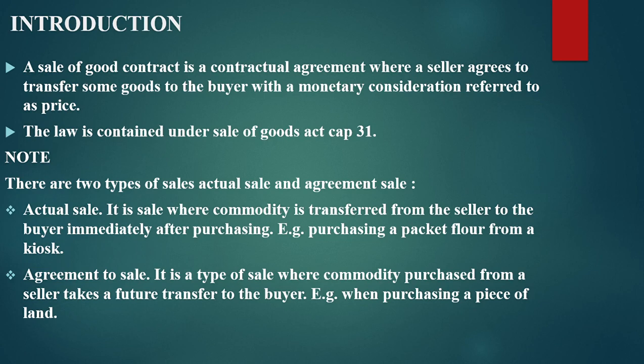Note that there are two types of sales: actual sale and agreement to sale. An actual sale is one where a commodity is transferred from the seller to the buyer immediately after purchasing — for instance, purchasing a packet of flour from a shop, or purchasing a mobile phone from a dealer. You are told the phone costs $13,000, you buy it and take it immediately. An agreement to sale is a type of sale where a commodity purchased from a seller takes a future transfer to the buyer.